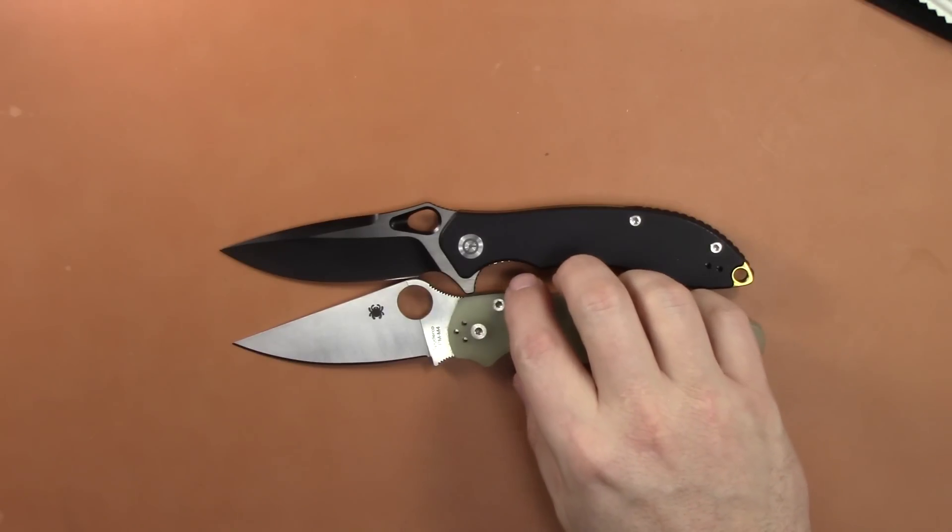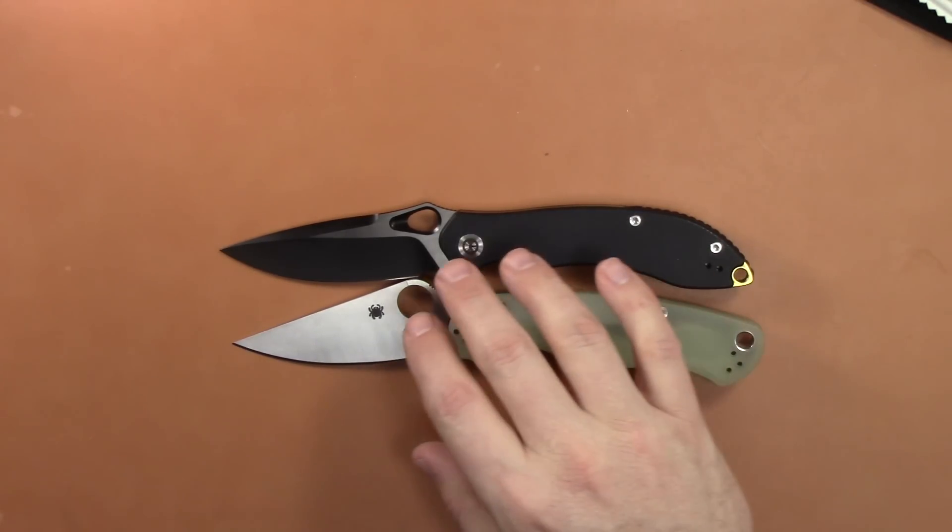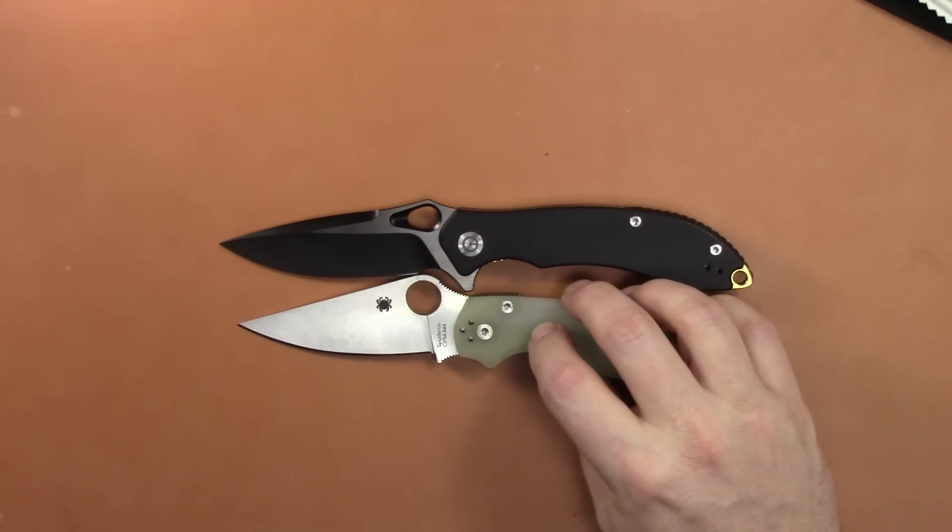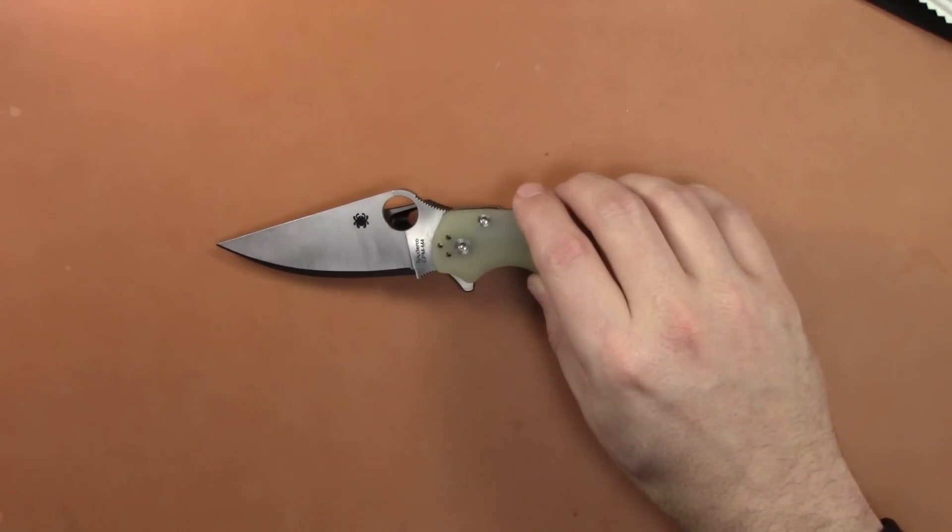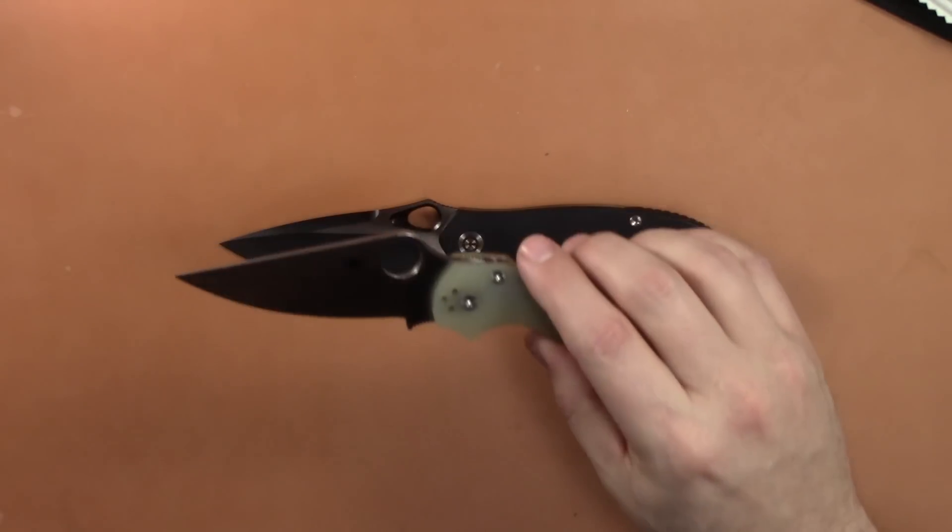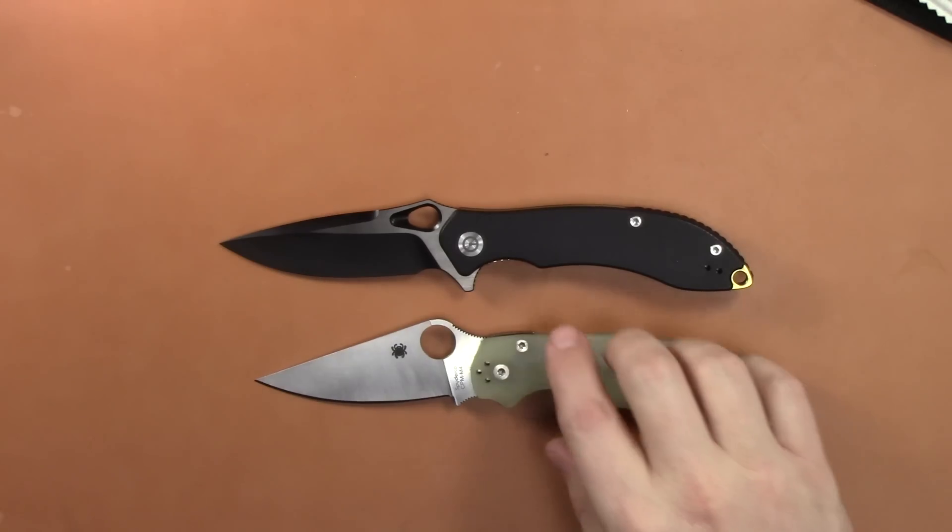In fact, I would say the Para 2 is actually larger knife. And it has, the Wii has a little bit more, well, it's hard to tell because of the choil. Curious. Actual cutting edge is probably about the same, but this one is a little smaller in the handle.